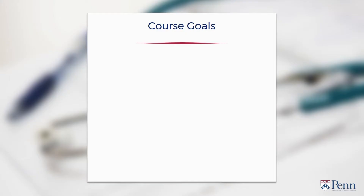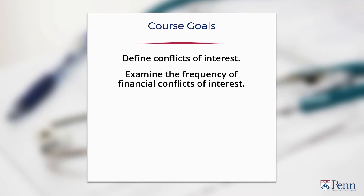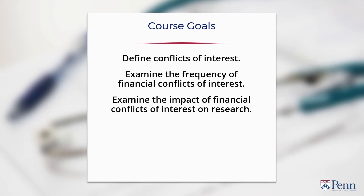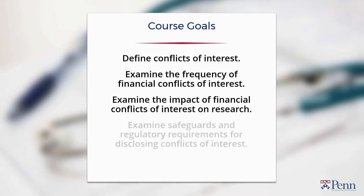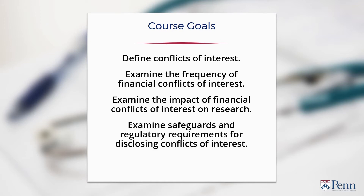This course is about conflicts of interest, in particular financial conflicts of interest. The goals for this course are four. We're going to define conflicts of interest in biomedical research and the severity of conflicts of interest. We're going to delve into the frequency of financial conflicts of interest in biomedical research. Third, we'll look at the impact of financial conflicts of interest on research. And finally, discuss the safeguards and regulatory requirements for disclosing conflicts of interest, including the NIH and FDA regulations.